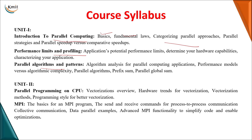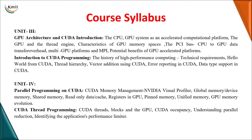In Unit 2, we enter the programming part where we'll see how parallelism can be achieved on a single CPU using Message Passing Interface. In Unit 3, we'll see how parallelism can be achieved on a GPU architecture — first learning about GPU architecture and then going into CUDA programming. In Unit 4, we'll cover the various memories present on a GPU, called CUDA memory management, the purpose of each memory, and how to perform thread operations on CUDA.